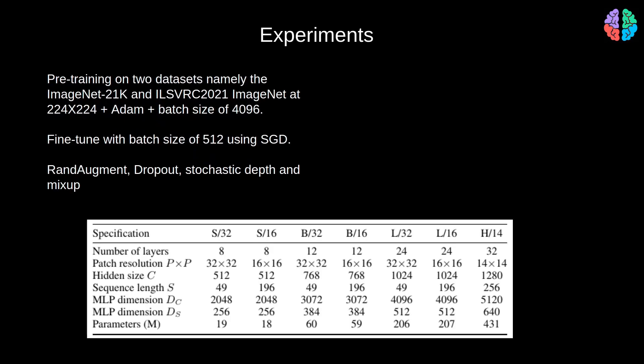They also do data augmentation such as RandAugment, dropout, stochastic depth, and mixup, which is becoming pretty much a common practice when training these massive networks. When fine-tuning for downstream tasks, they choose a batch size of 512 and use gradient descent instead of Adam optimizer.